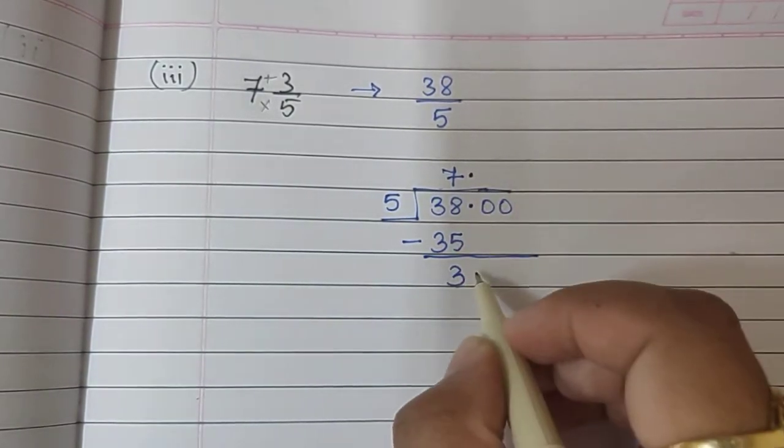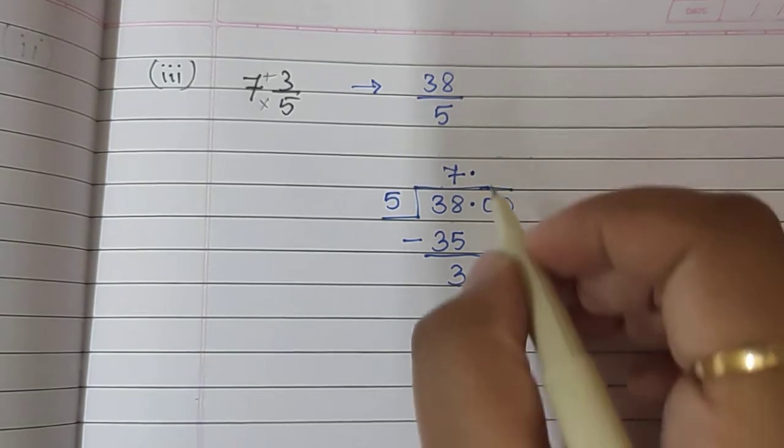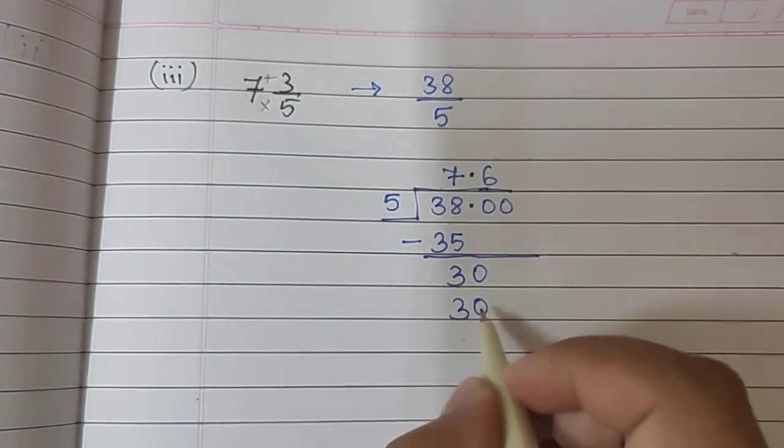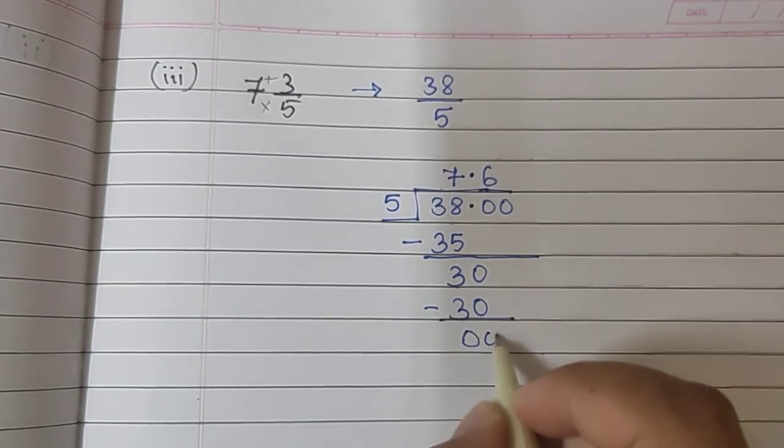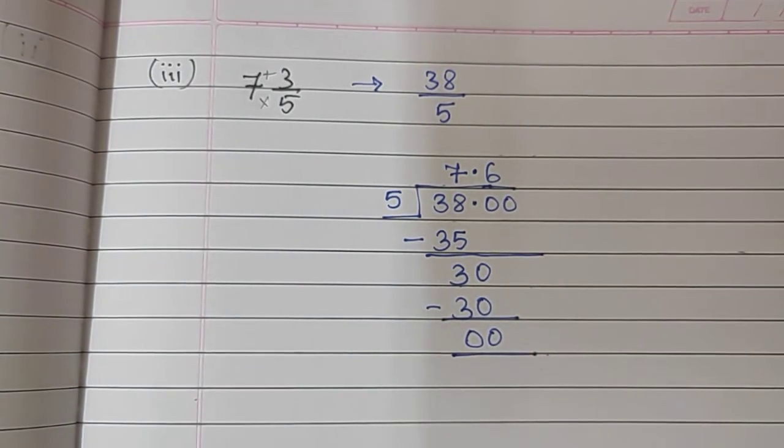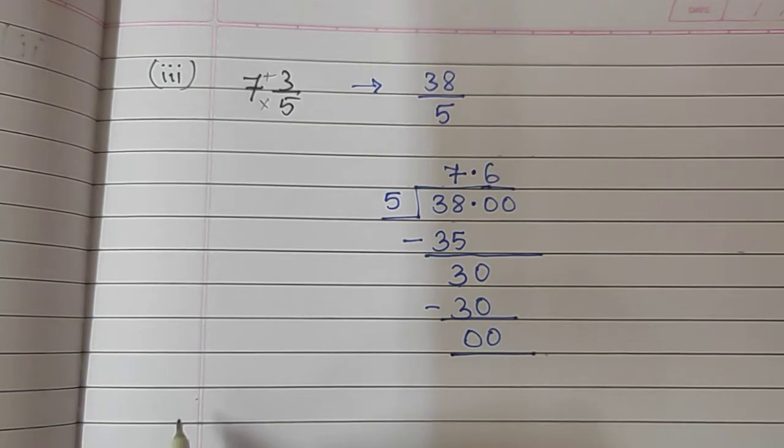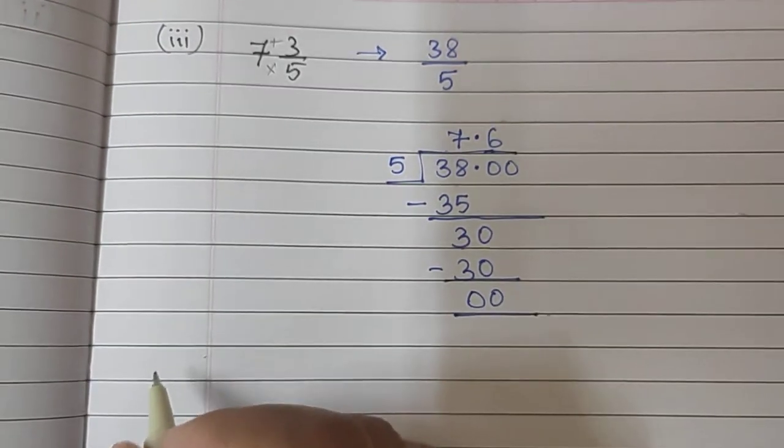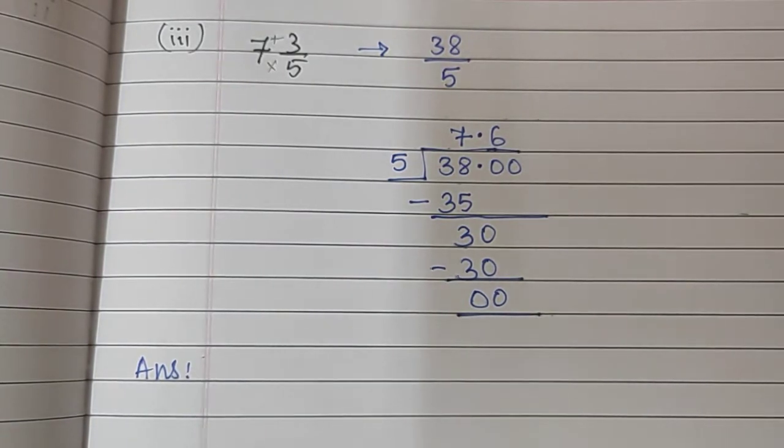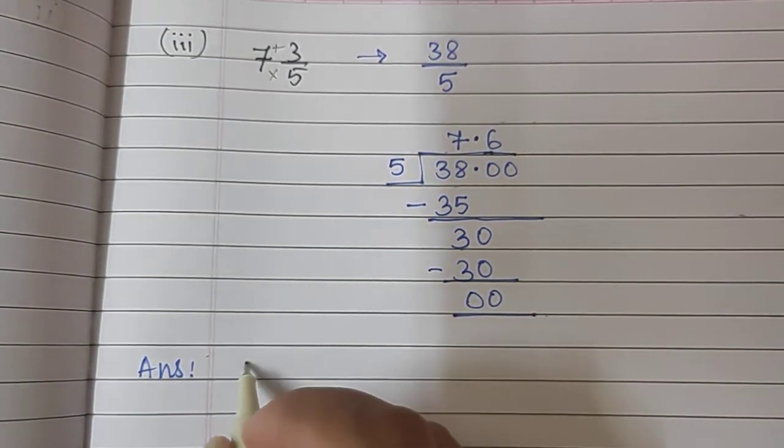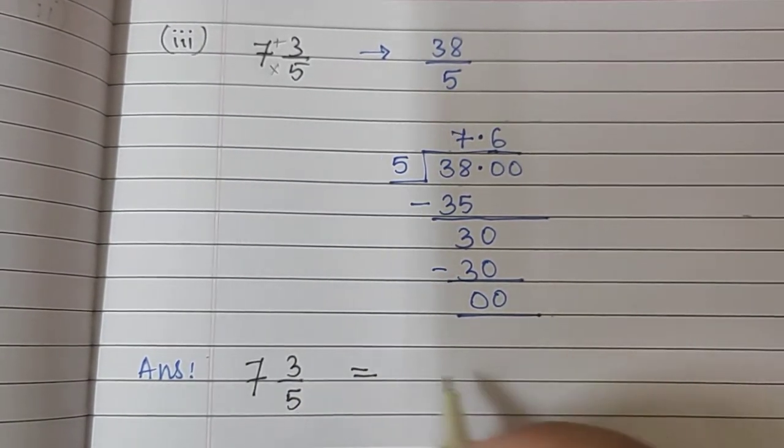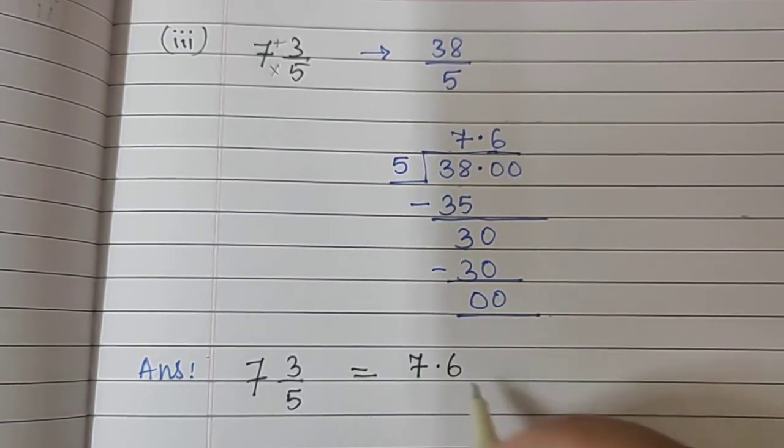Put the point up. Bring the 0 down. 5, 6's are 30. And, we got 0 directly. So, we don't need to use the other 0. So, the answer is 7.6. The final answer is 7 3 upon 5 is nothing but 7.6.